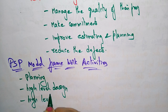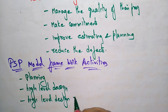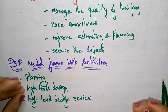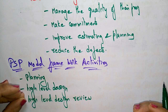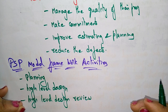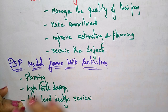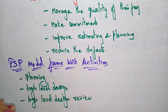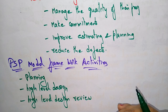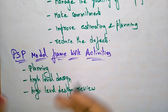After High Level Design comes the High Level Design Review. This involves formal verifications to uncover errors — errors that were not covered so far. The Personal Software Process provides reviews using formal verifications to identify and address those uncovered errors.